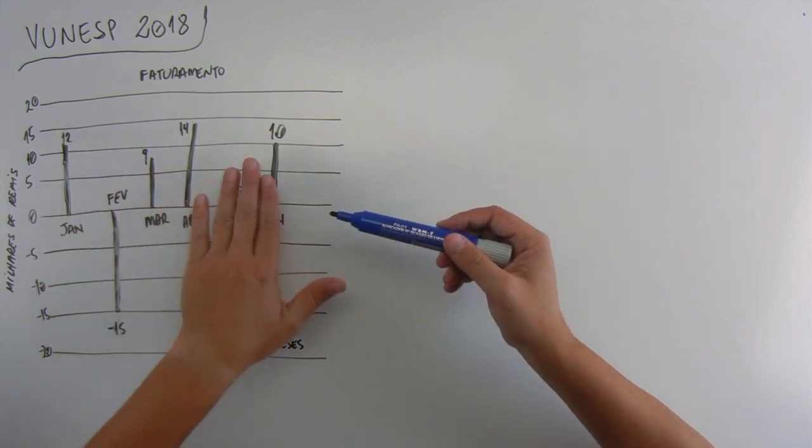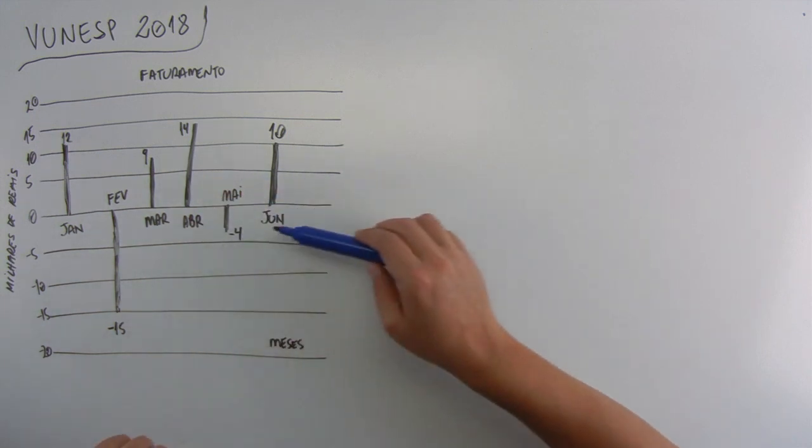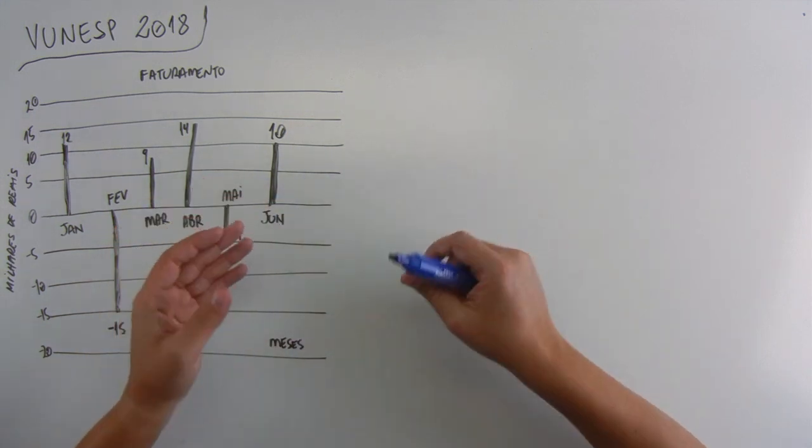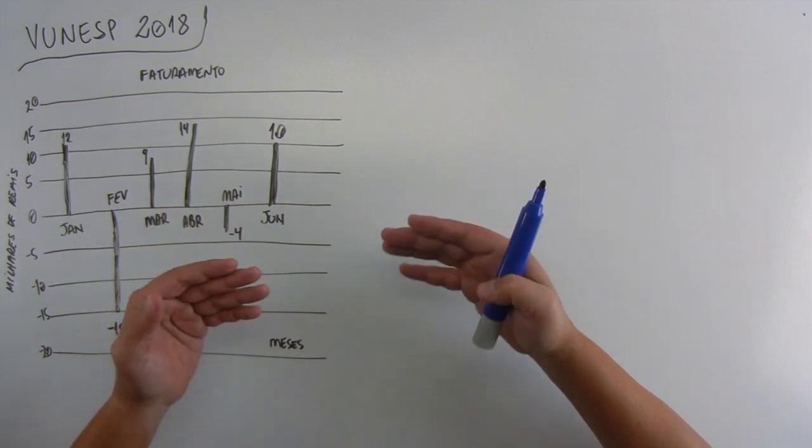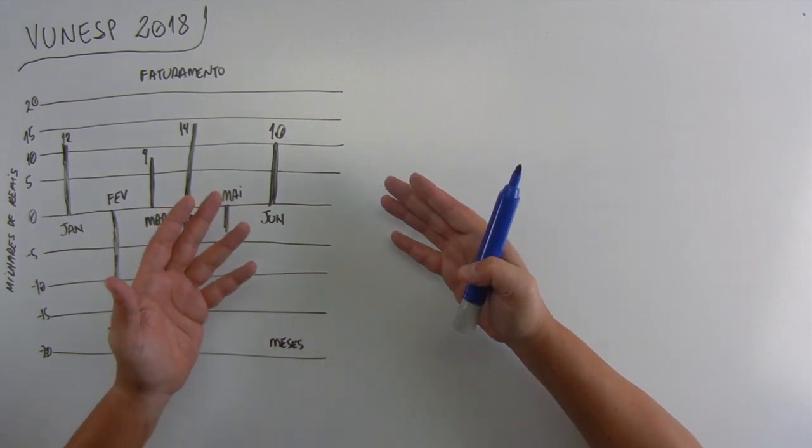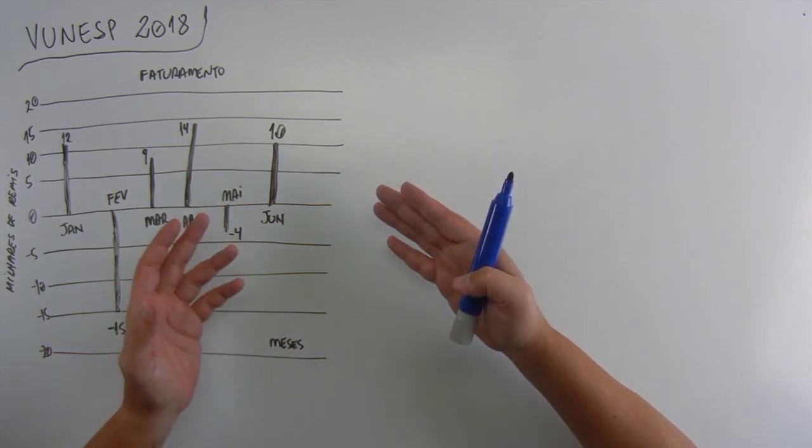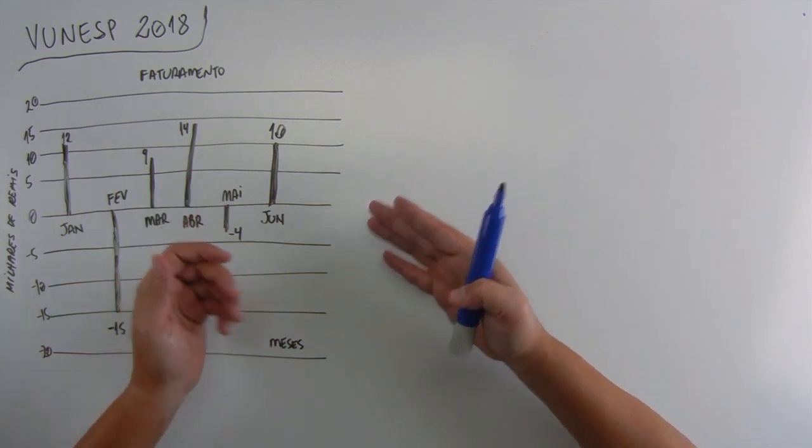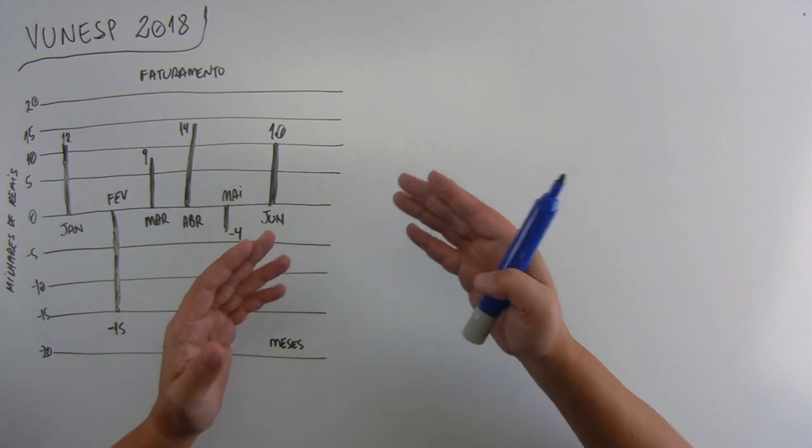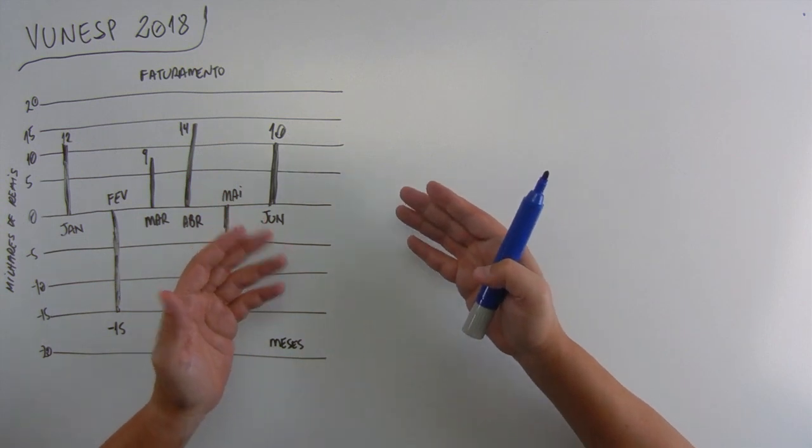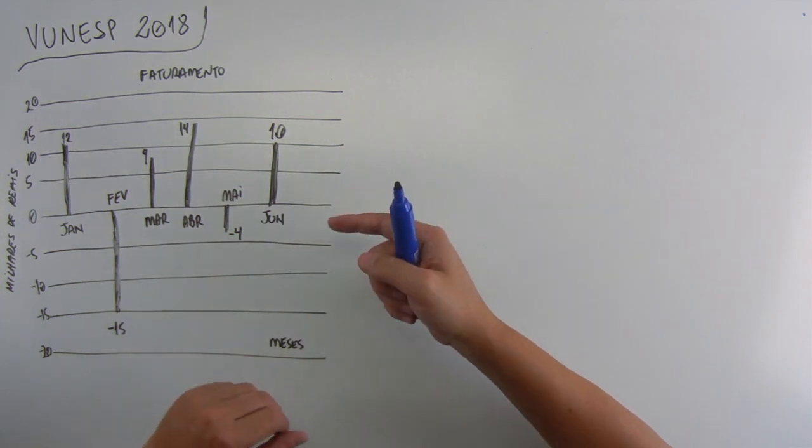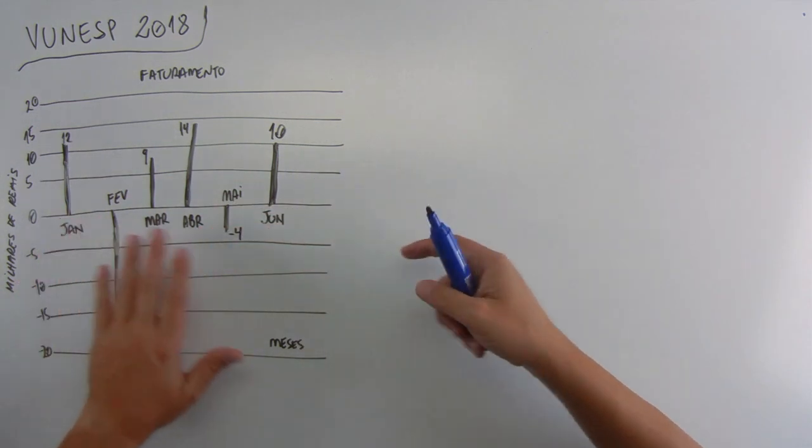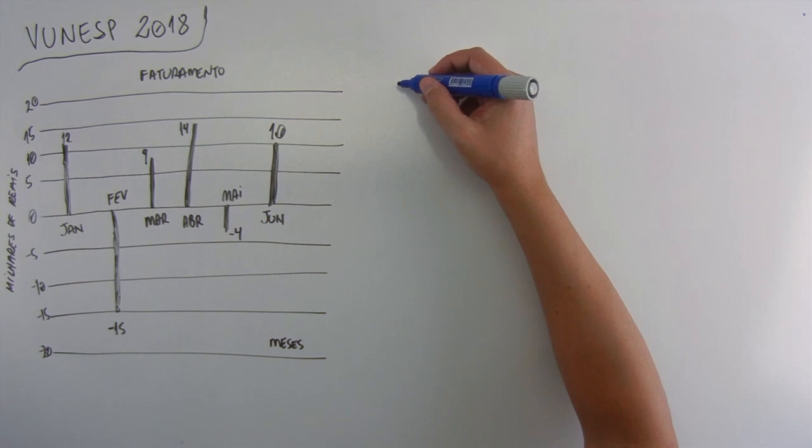Se a gente somar todos os positivos e depois somar todos os negativos e tirar um do outro, a gente vai ver o quanto teve de lucro ou de prejuízo. Mas se a gente continuar lendo o enunciado, ao analisar o gráfico, conclui-se que nesse período a empresa obteve em reais o lucro de. Ou seja, vai ser lucro, então vai faturar mais do que teve prejuízo. Vamos ver quanto que foi o faturamento positivo.